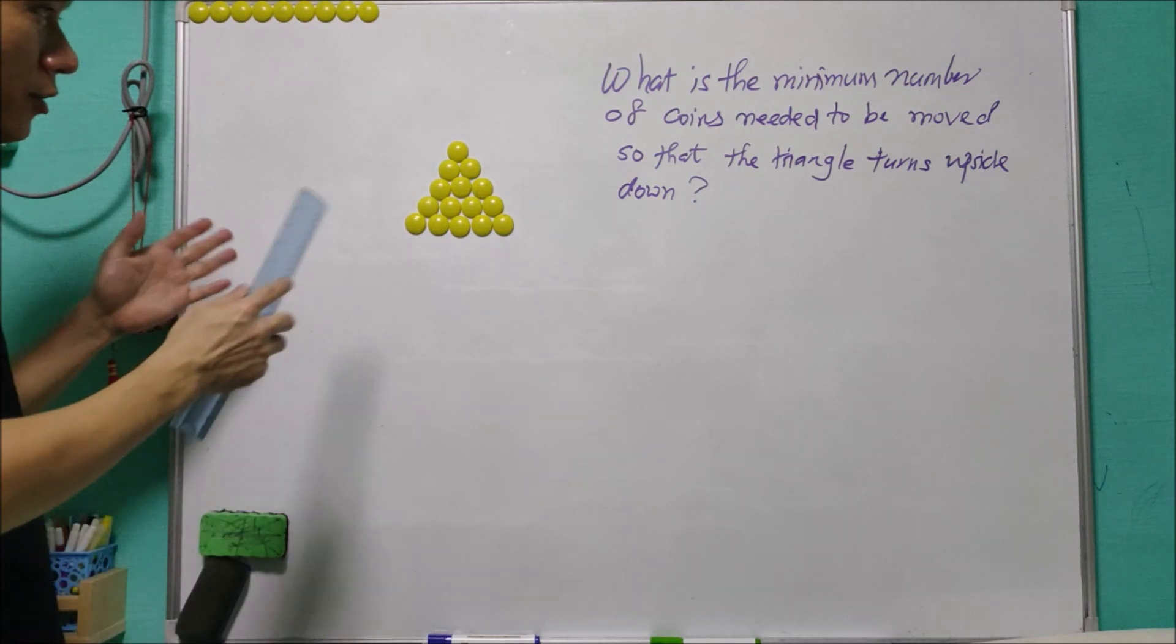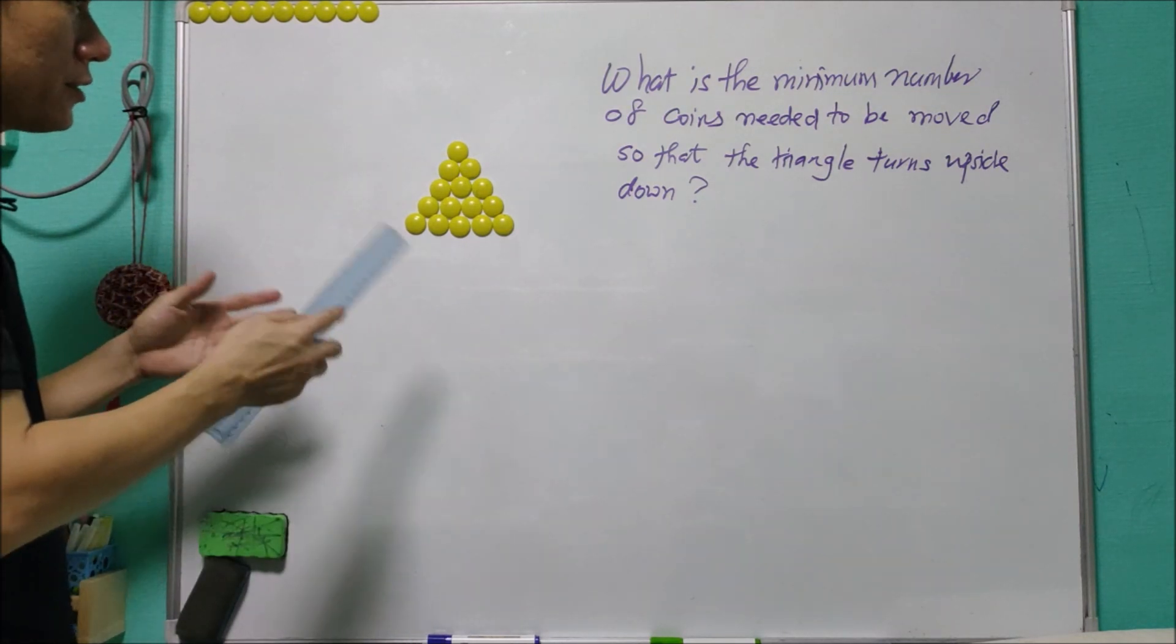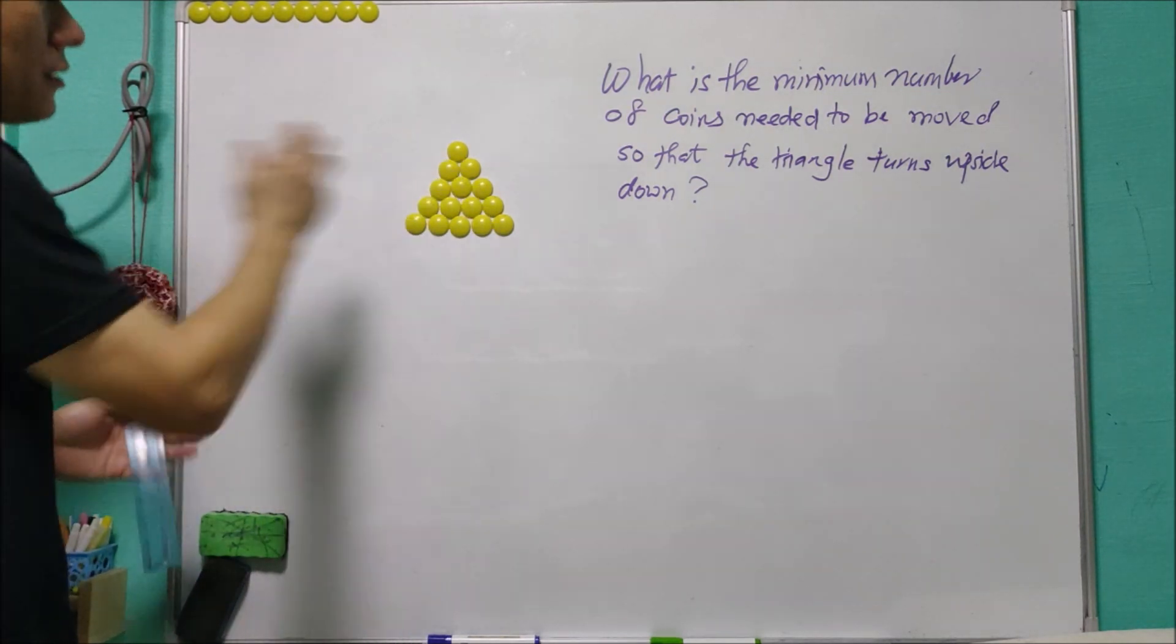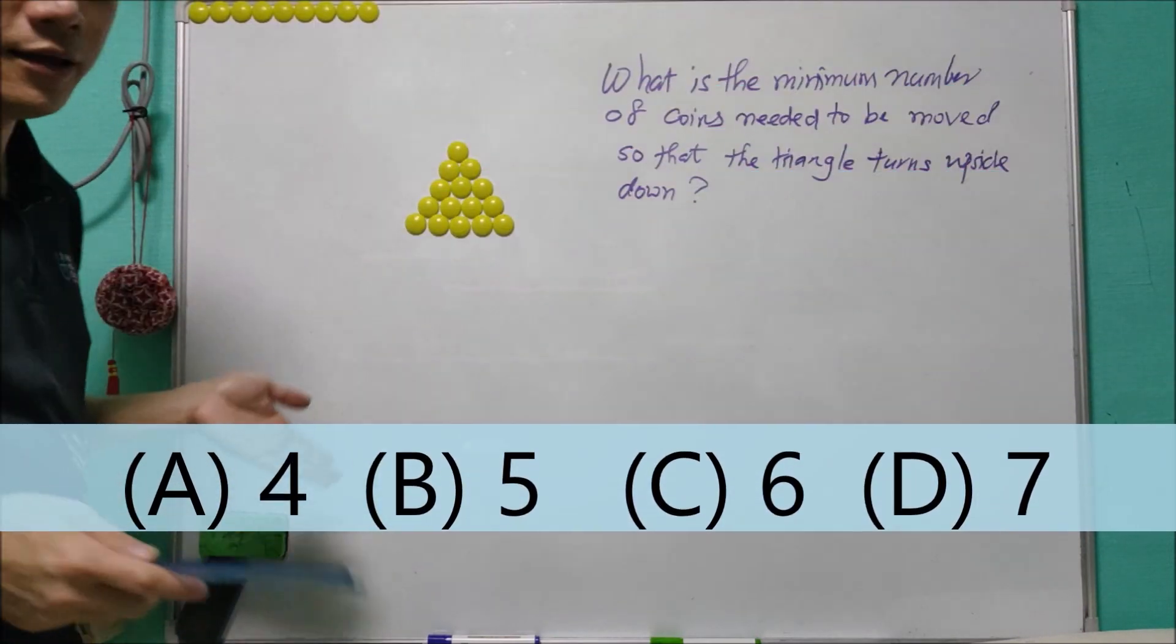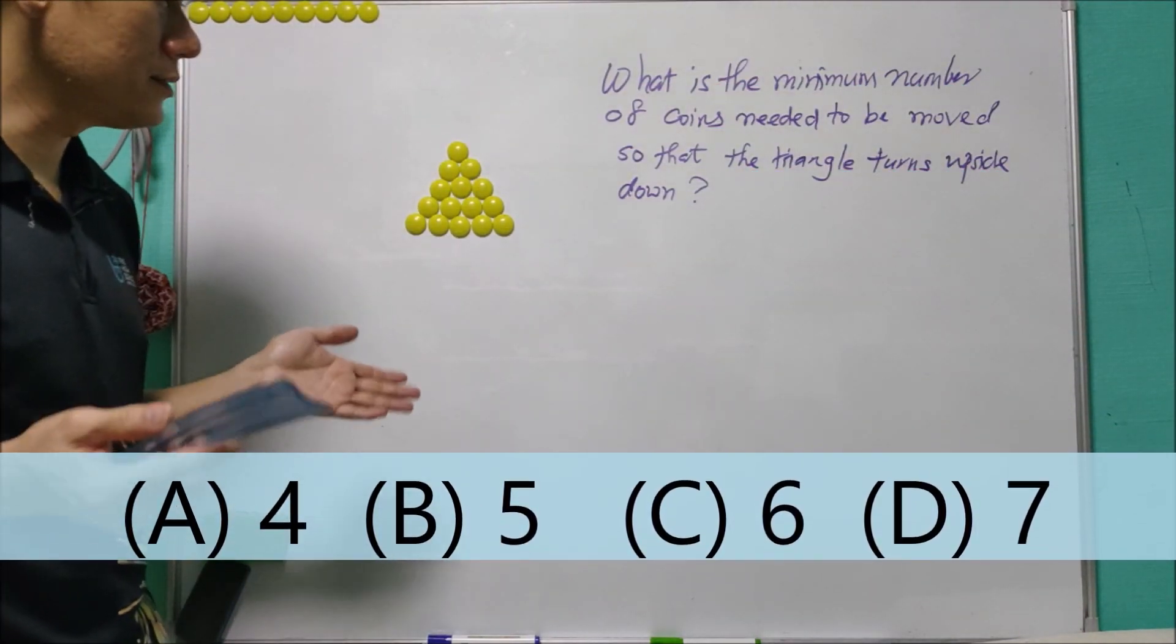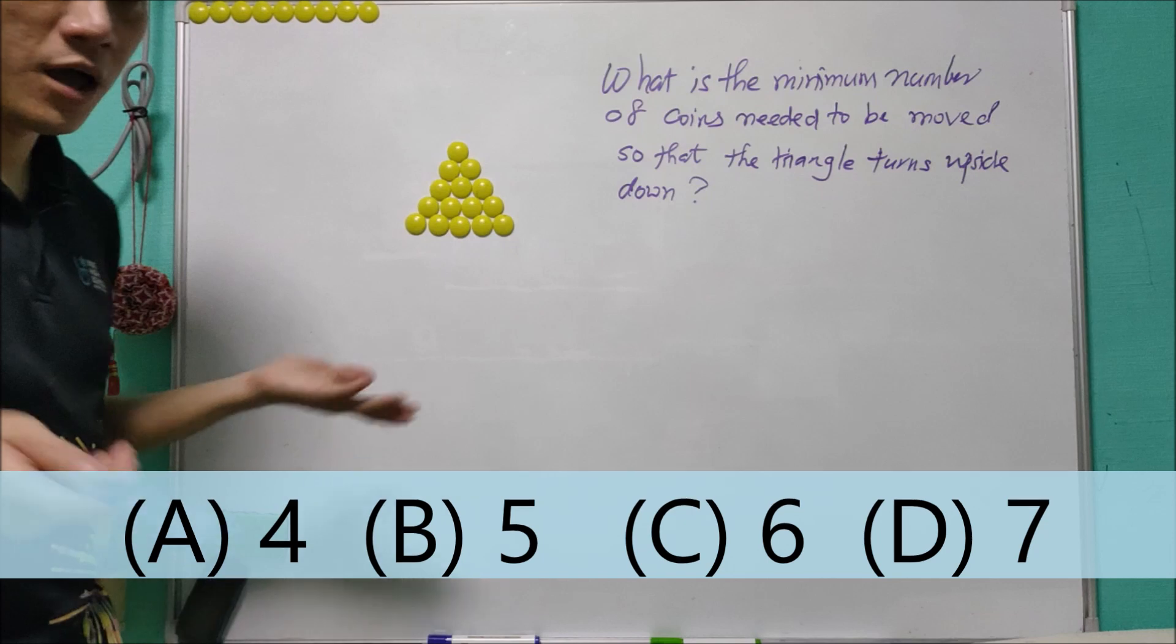What is the minimum number of coins needed to be moved so that the triangle turns upside down? The options are A: 4, B: 5, C: 6, and D: 7. What do you think?